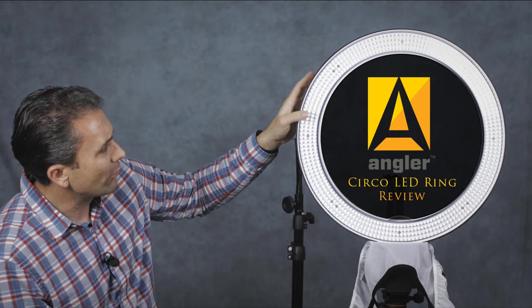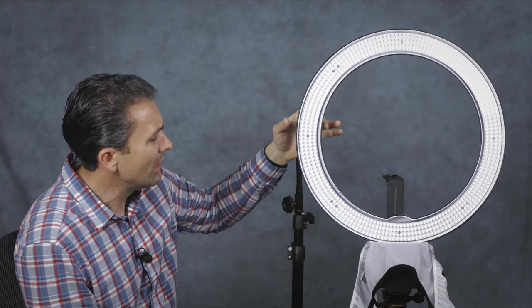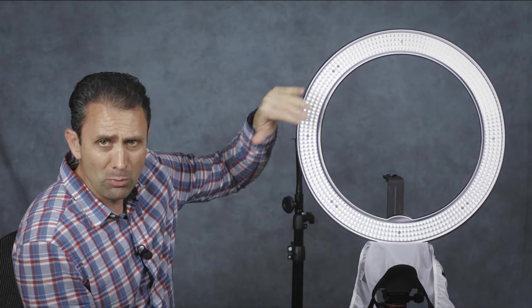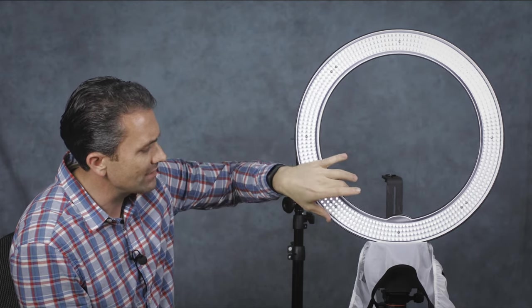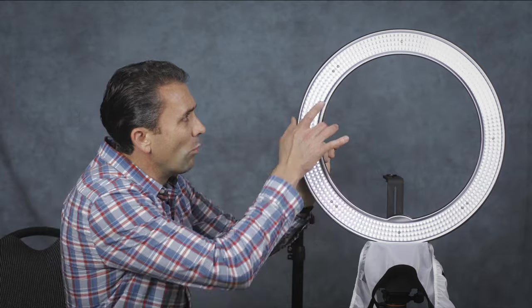Now, one of the challenges I've run into with some other ring lights before, particularly the ones using CFLs, is that they typically will come with some kind of diffuser type panels. And in some cases, that's actually been like a plastic overlay.